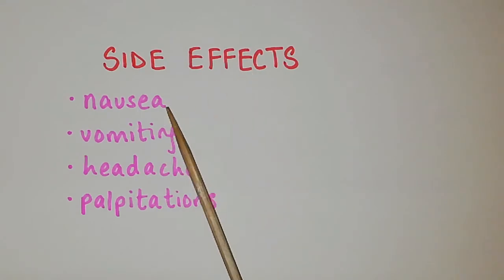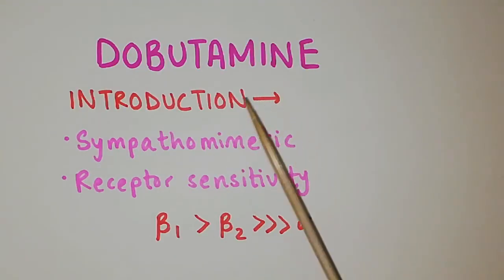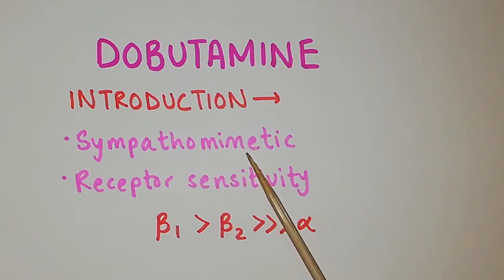Its side effects include nausea, vomiting, headache and palpitations. Now coming to dobutamine, it is also a sympathomimetic drug, so it mimics the activity of the sympathetic system. It has the greatest affinity for beta 1 receptors, then beta 2 receptors, and the least affinity for alpha receptors.